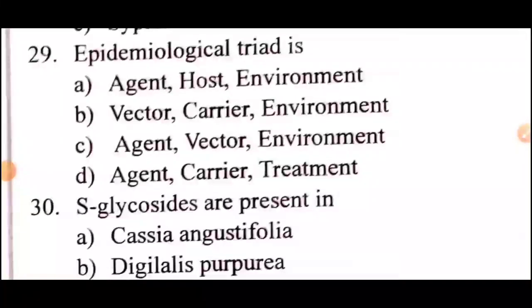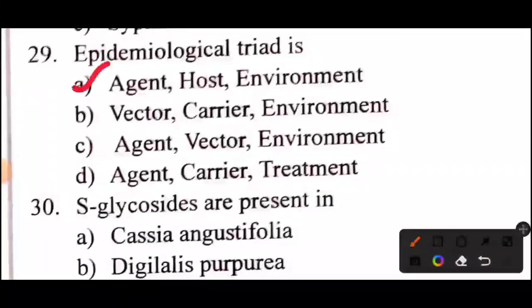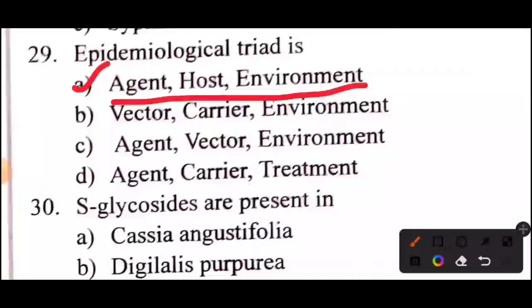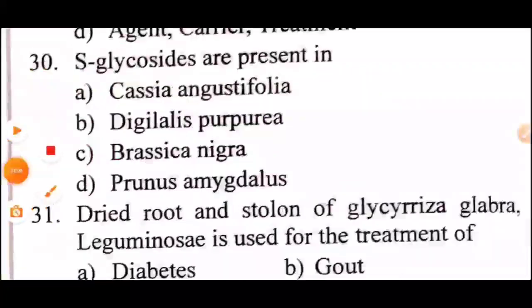Question 21 of 60: What is the Epidemiological Triad? Answer is Option A: Agent, Host, and Environment.